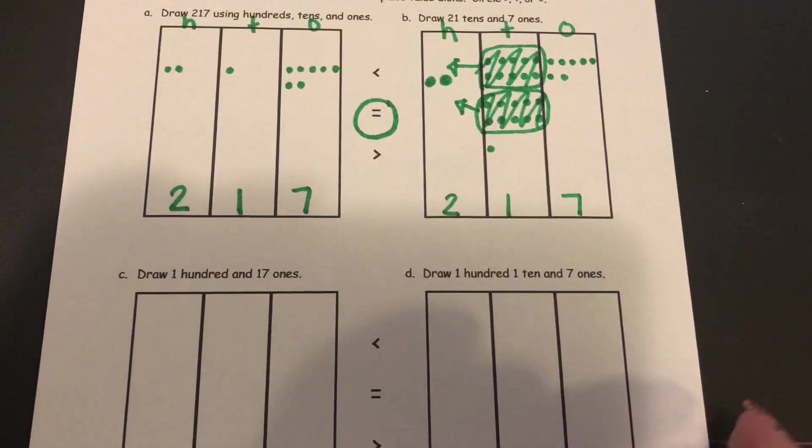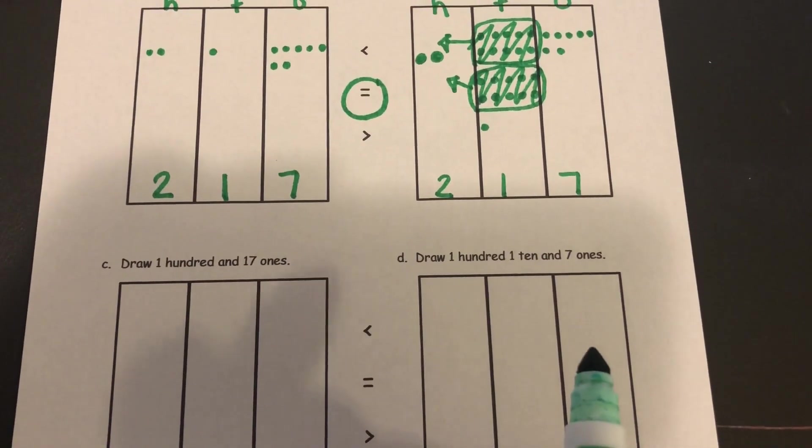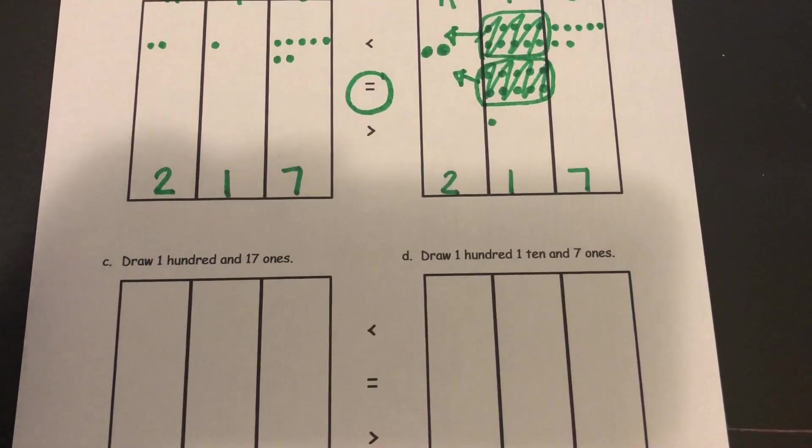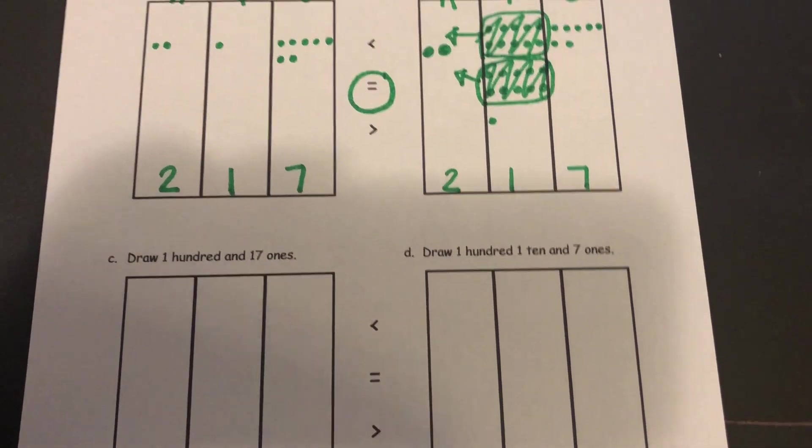All right, and the next one is the same thing. You're going to draw them and if you can bundle a group of ten together then you'll turn it into the next place value.